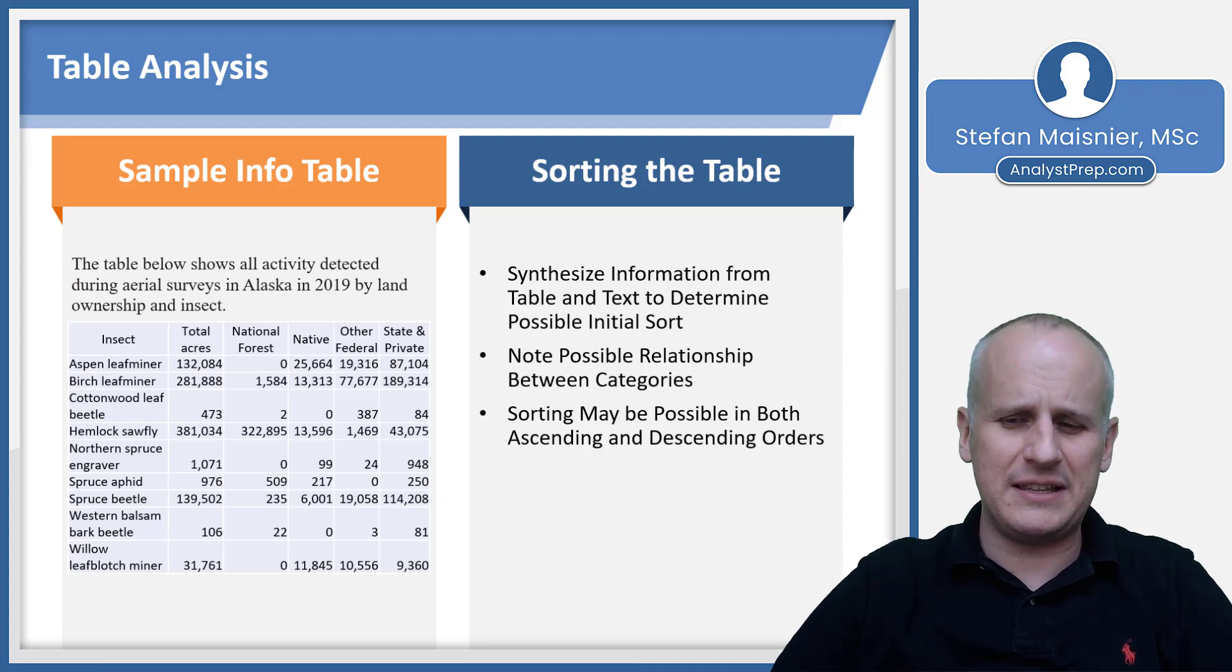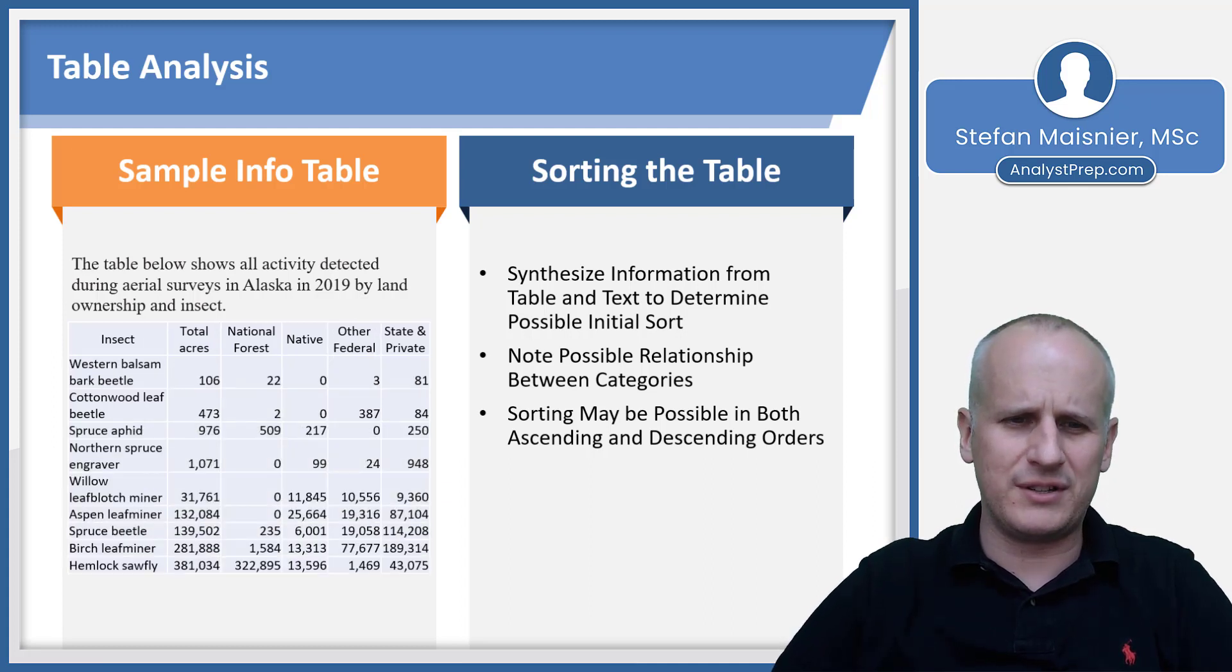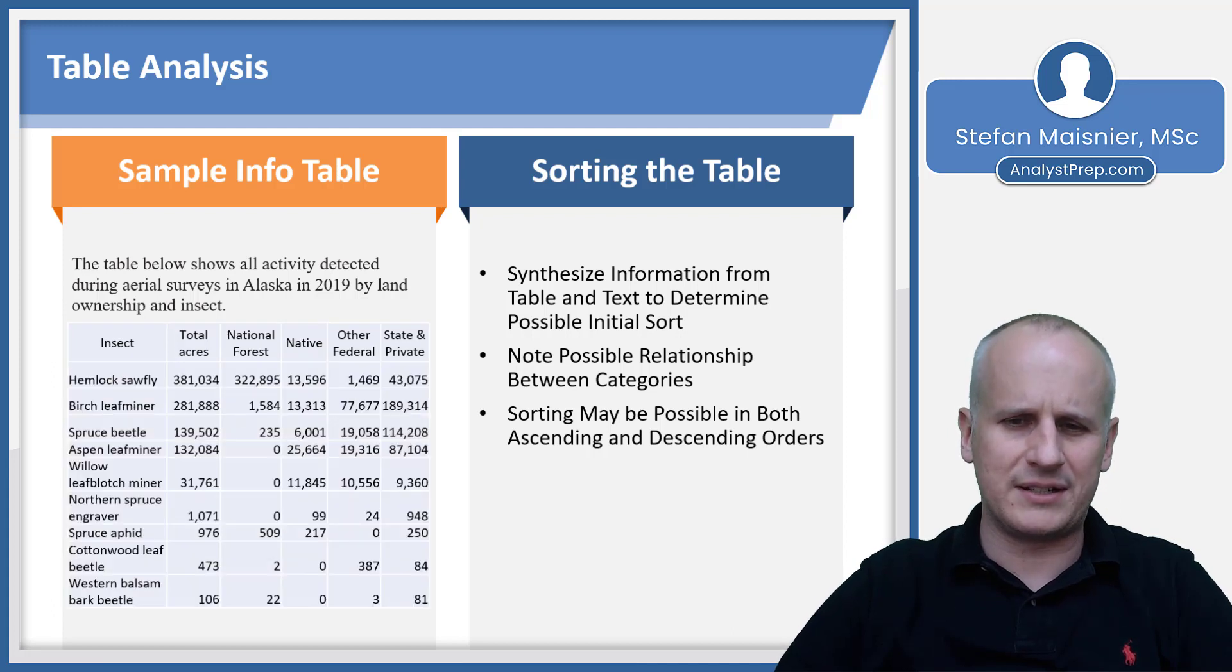You can sort in both ascending and descending order in many of the tables. It's not guaranteed that you can, but often you will be able to. And you can see here, we've now sorted by total acres, and that's going to be fewest to most, but we can also sort from greatest to least. And it's completely at your discretion which you prefer.